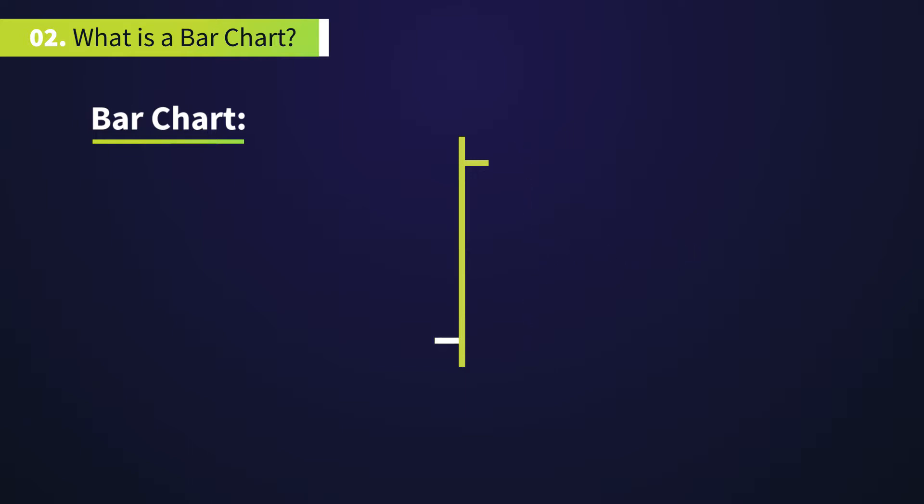A tick to the left represents the opening price and a tick to the right represents the closing price. The vertical line, together with the left and right ticks, is referred to as the bar.